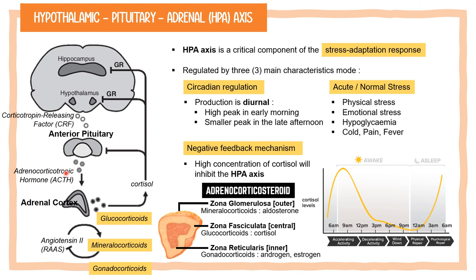The breakdown of POMC not only releases ACTH but also releases segments such as melanocyte-stimulating hormone, or MSH. MSH is important because it can regulate your appetite and skin pigmentation — that is why during stress some people experience increased appetite while others have reduced appetite. Another product of POMC breakdown is beta-endorphin, which is important because it can reduce stress and maintain homeostasis.